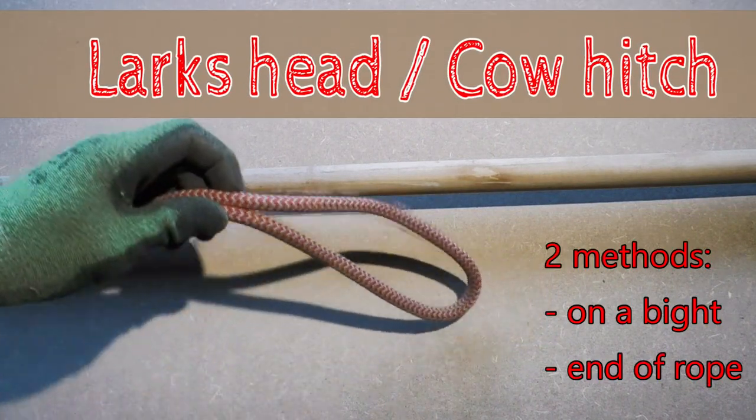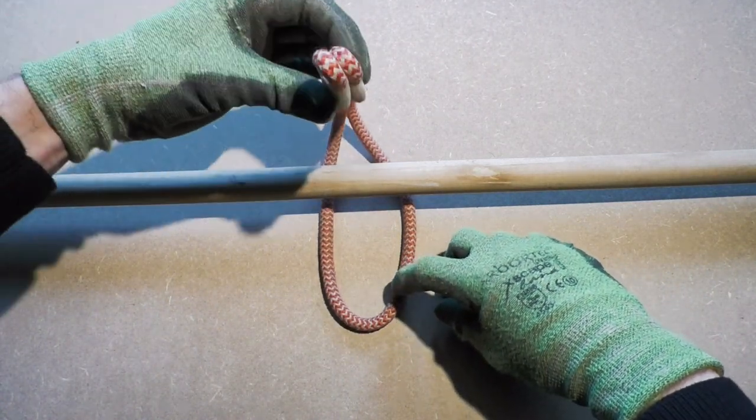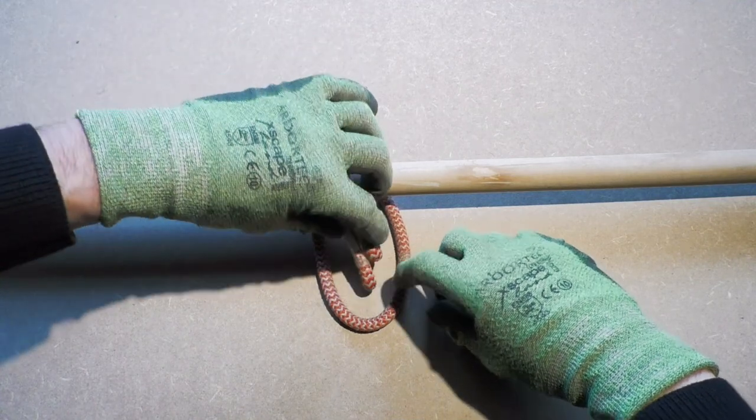The larks head or cow hitch is a simple to tie hitch. To tie the larks head, you grab a bite of rope and fold it around an object. Then you take the two working ends and stick those through the band.